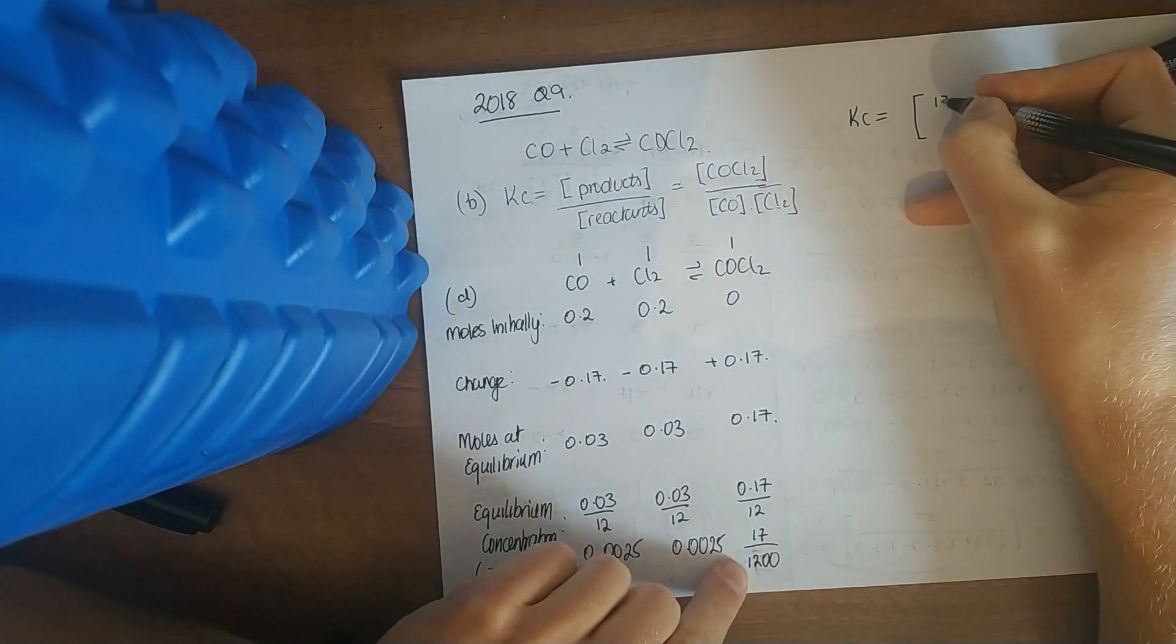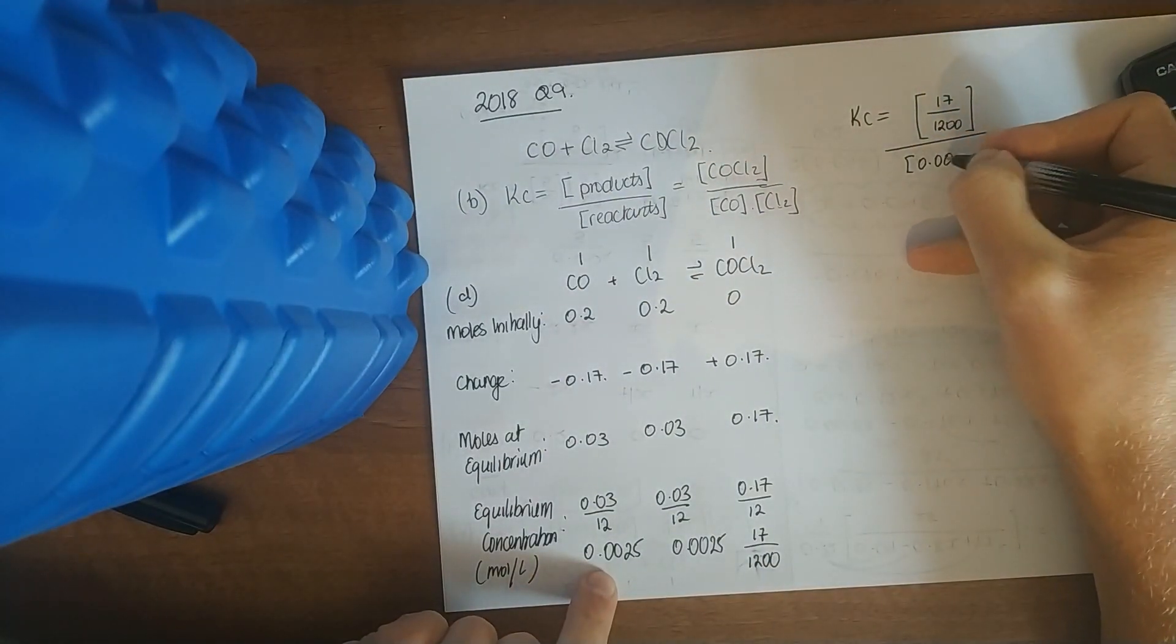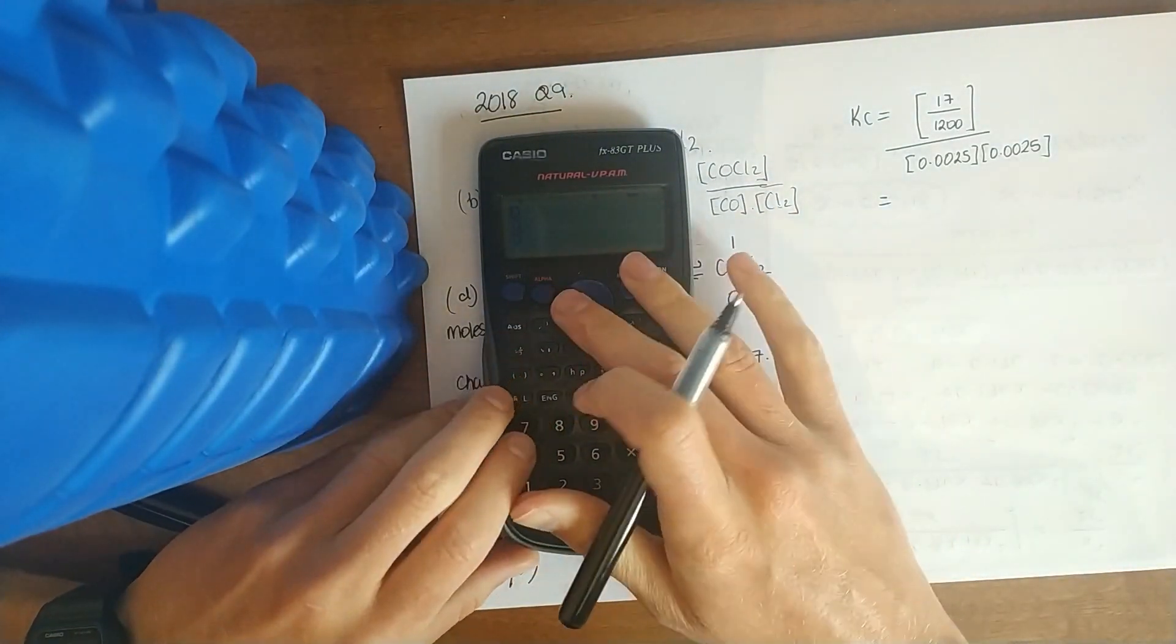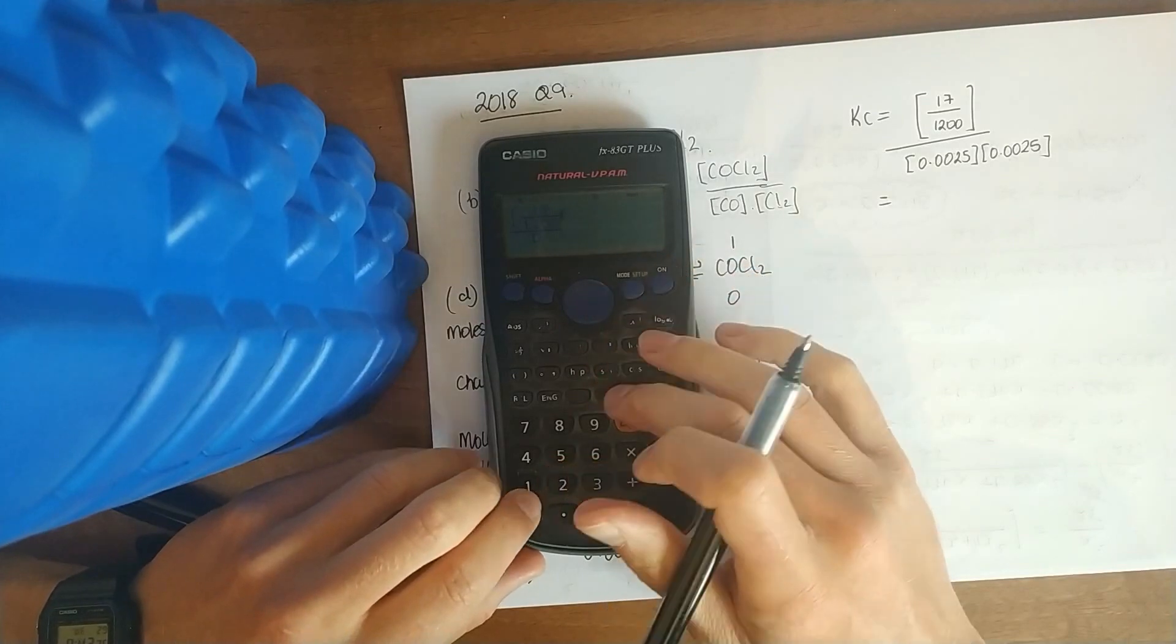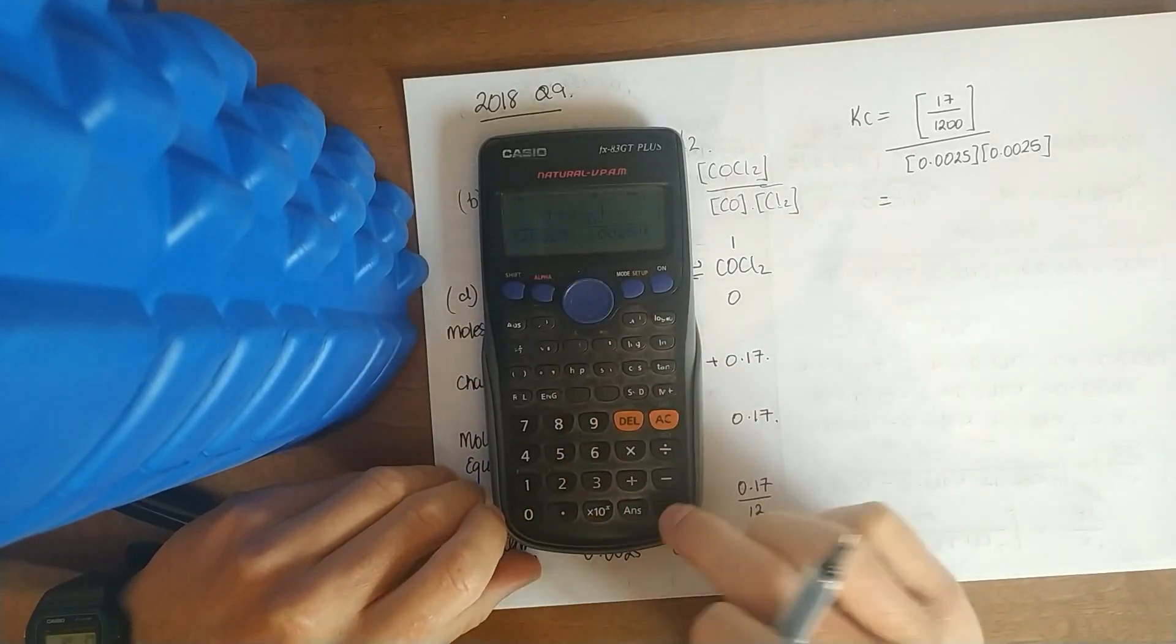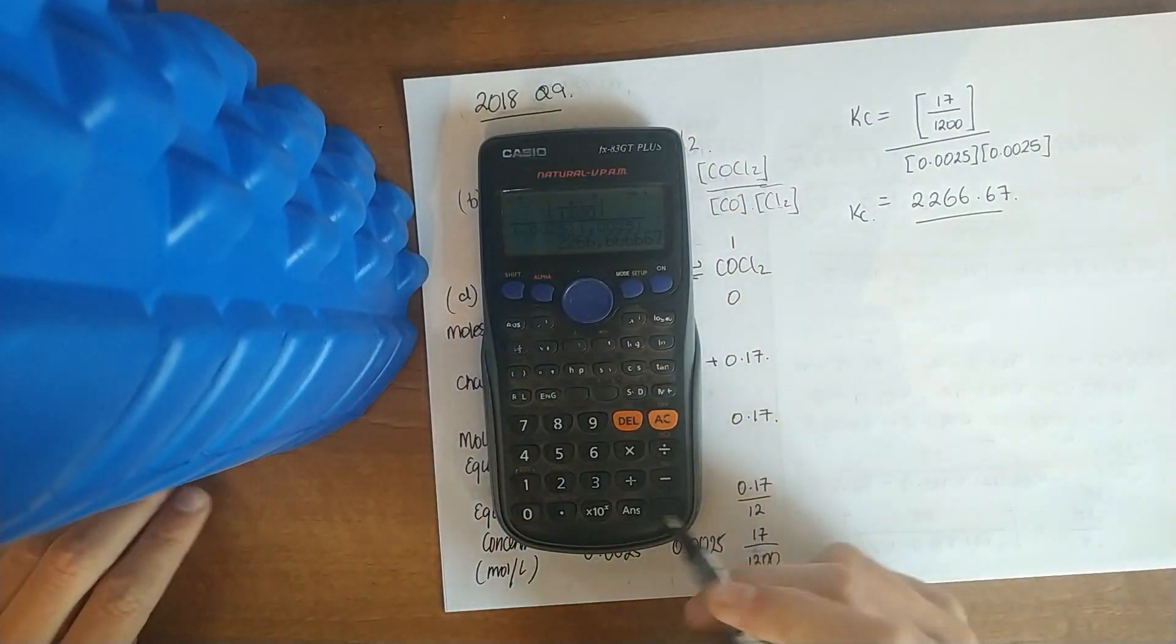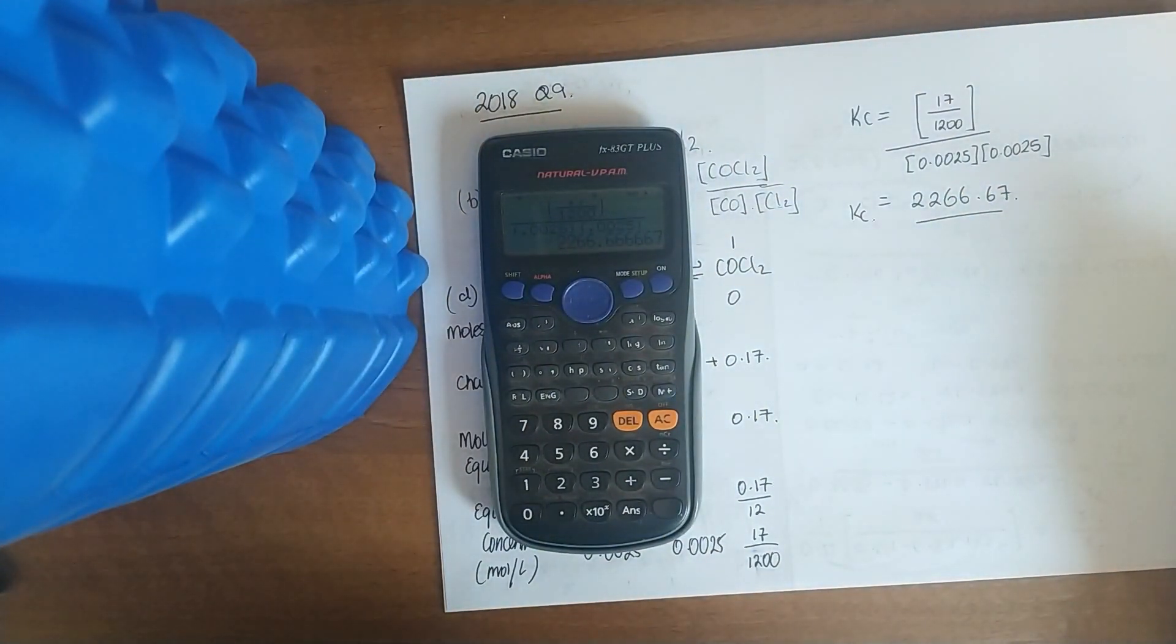Throw it in, get your answer. We get a value of 66.67. So that means equilibrium is very much on the right hand side. It doesn't say give it to the nearest whole number or anything. So I think we're good. We'll stop there, we'll do a few more.